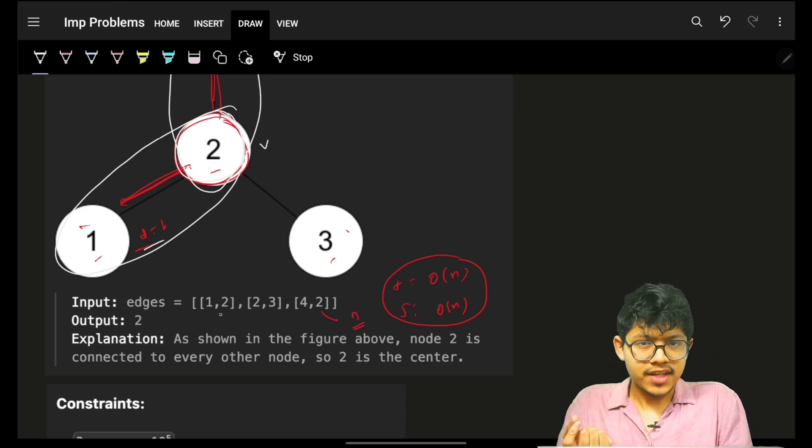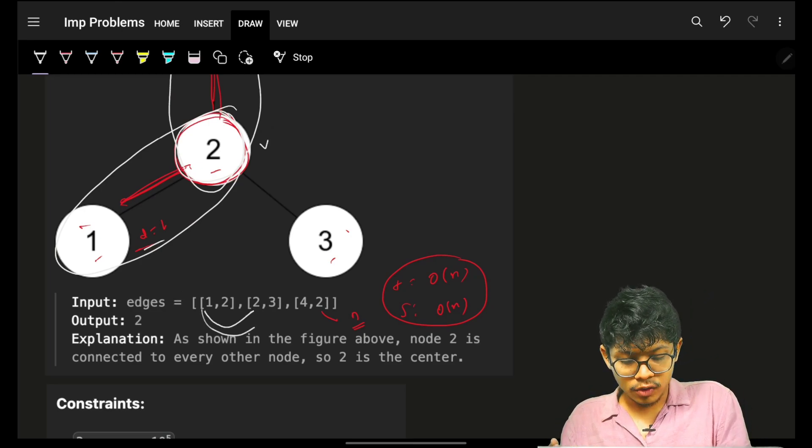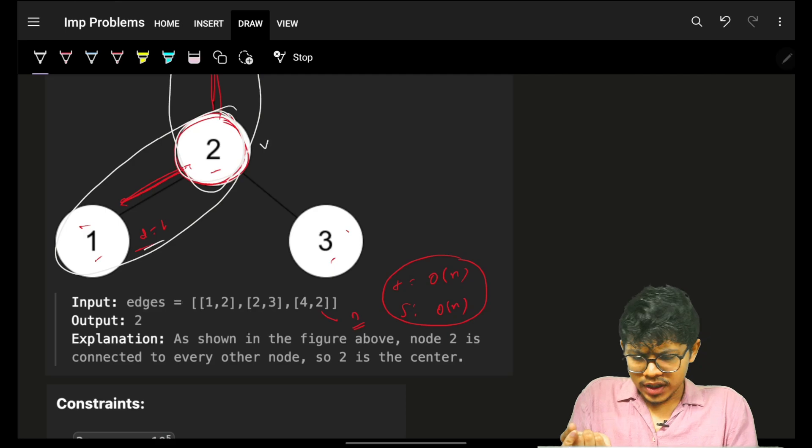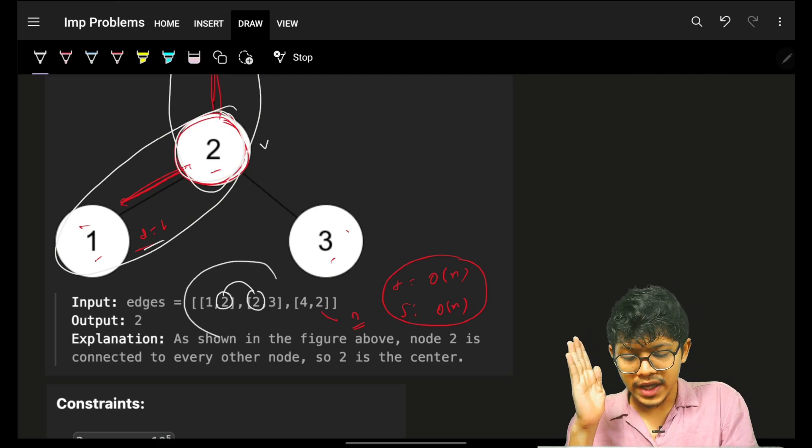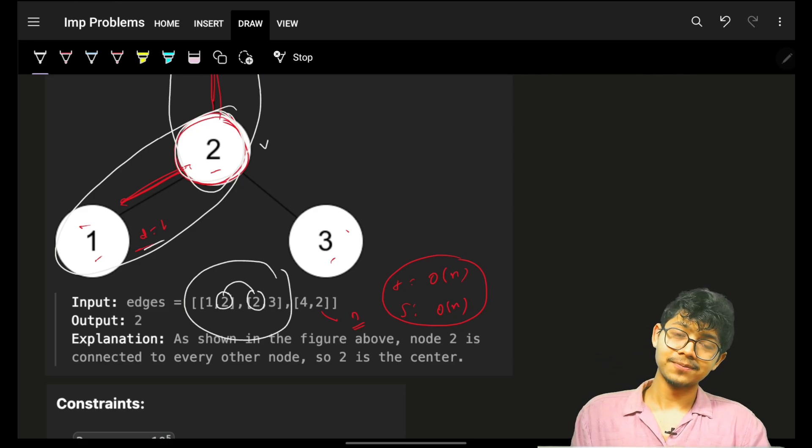Which means that if 2 is common between two edges, so that 2 is the center. And with this, you're only comparing the starting two edges.